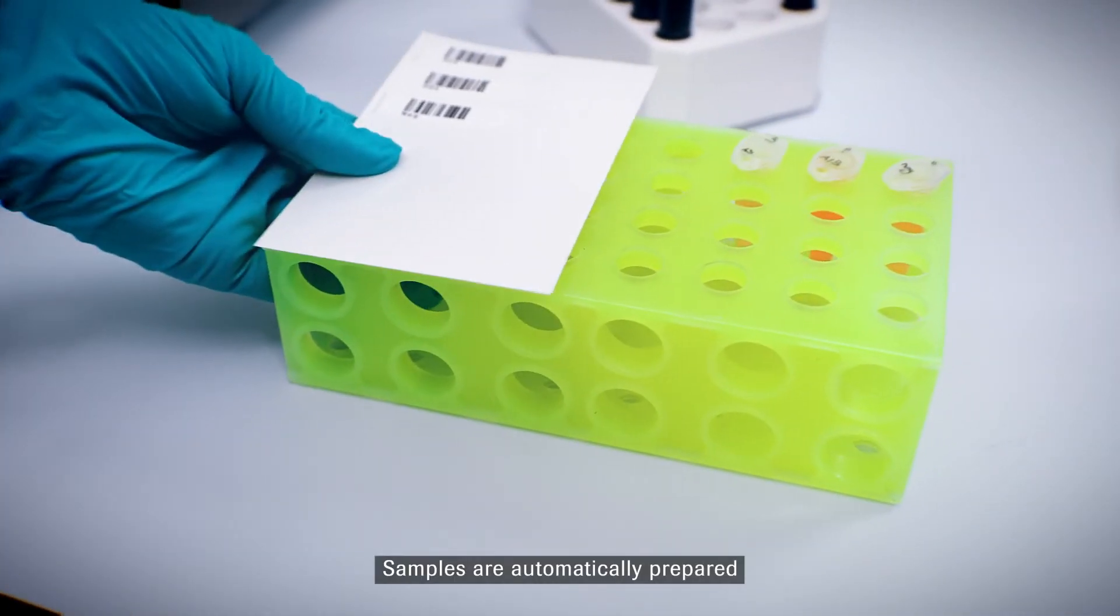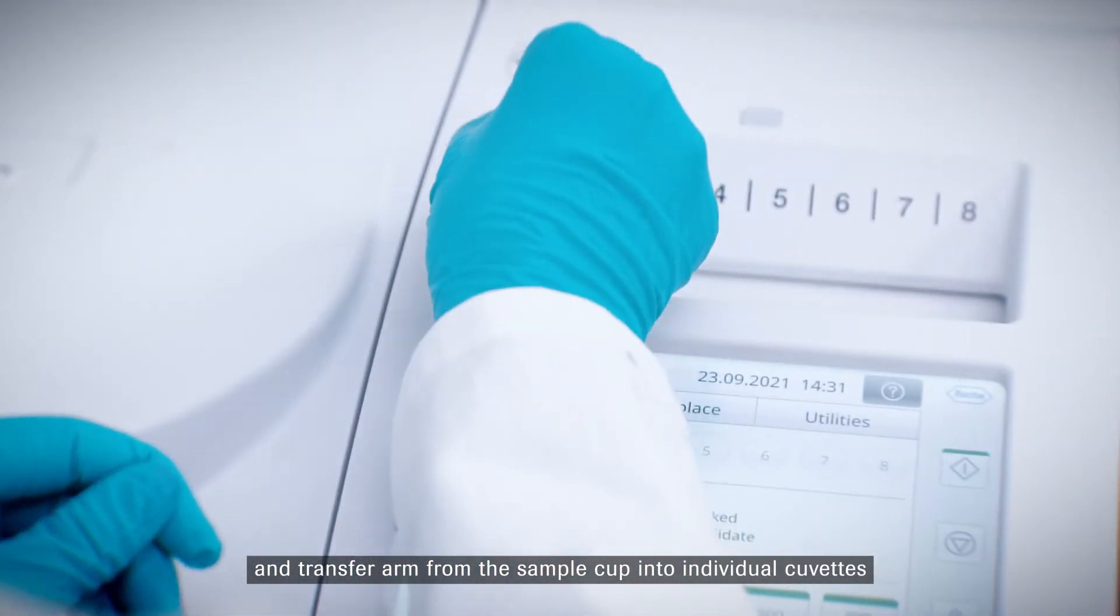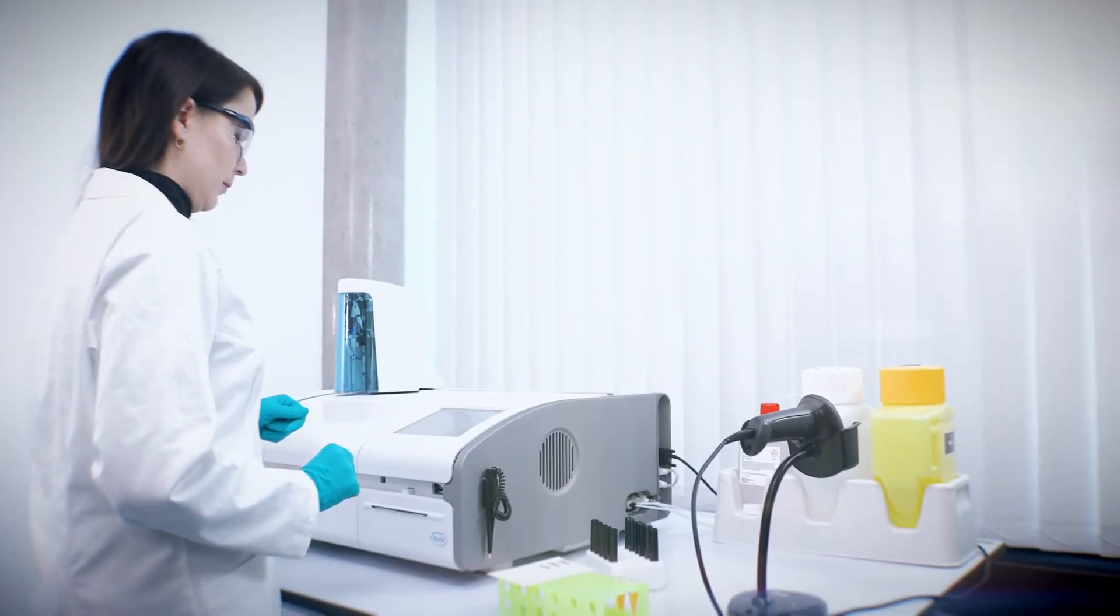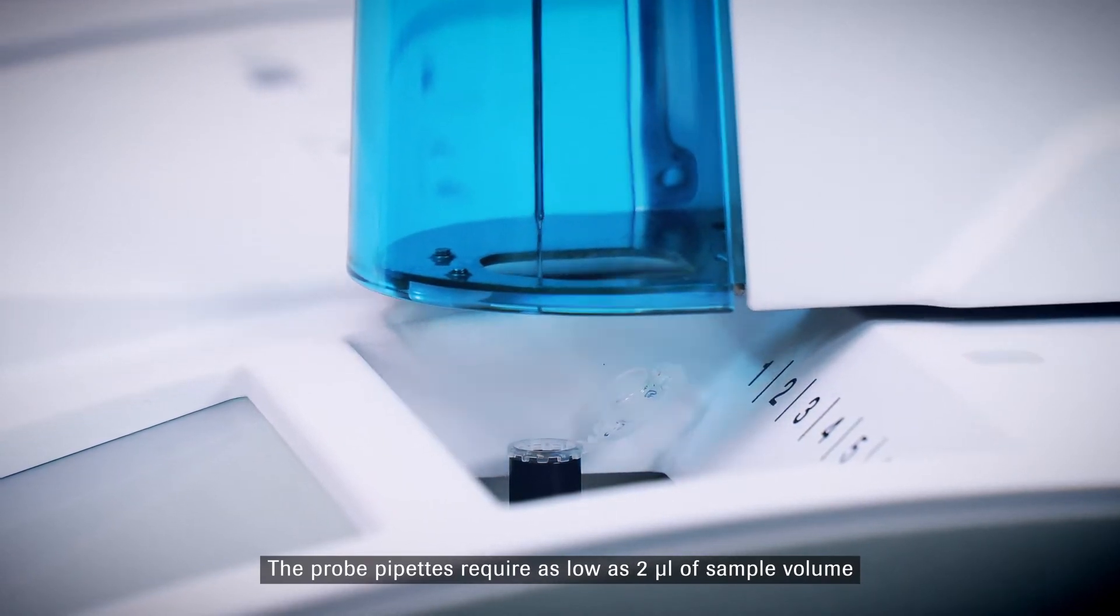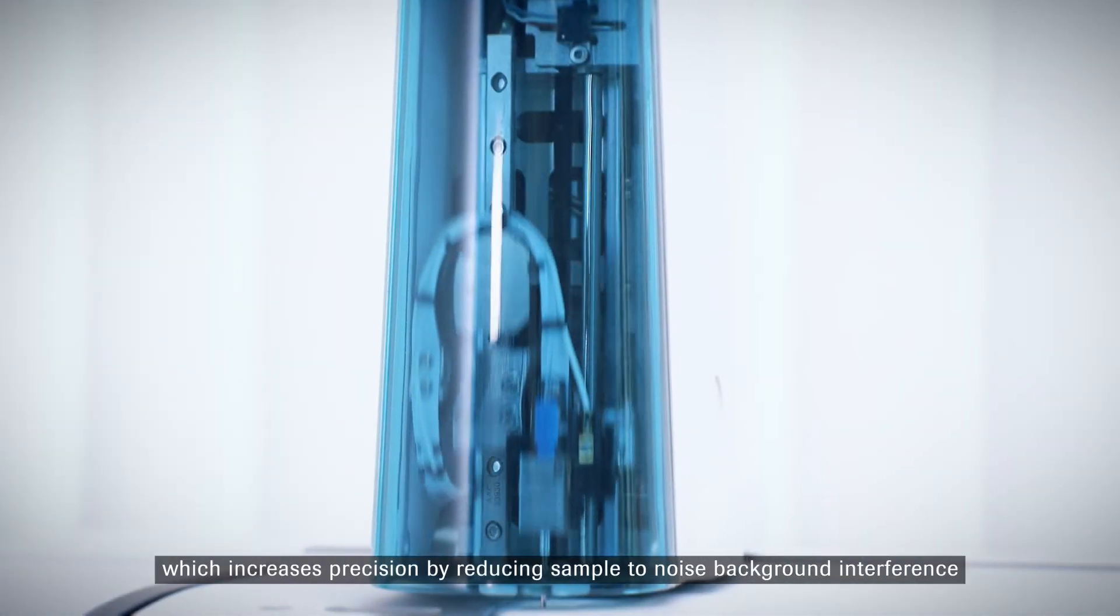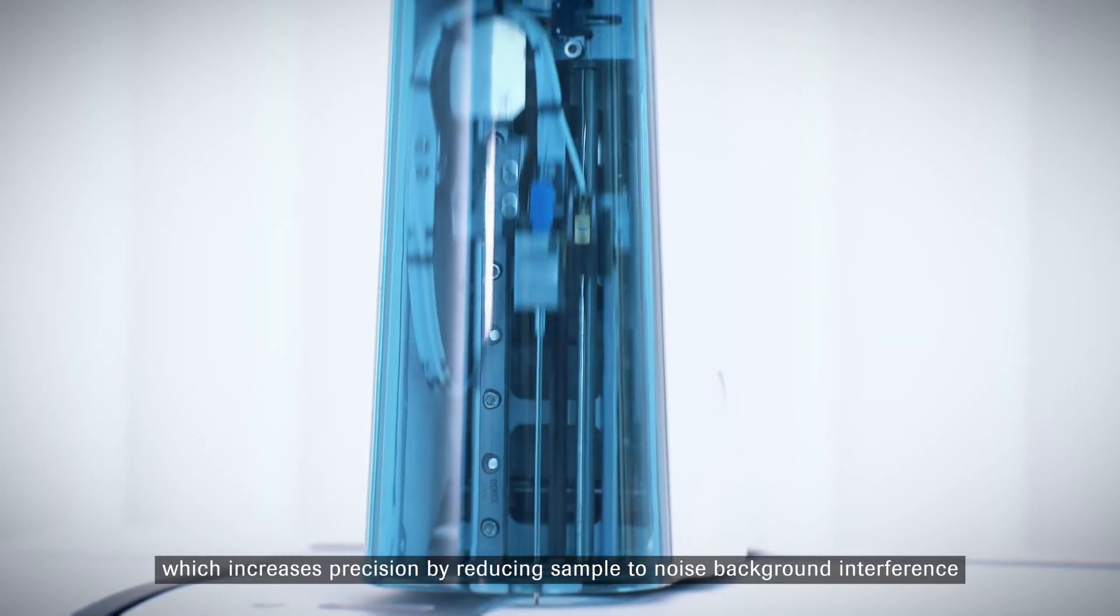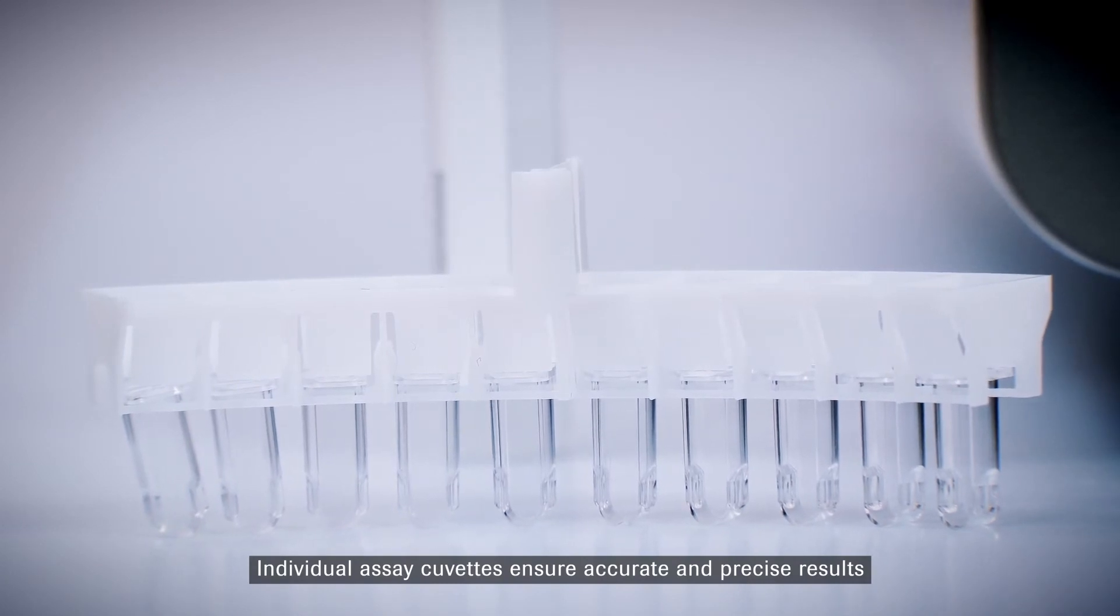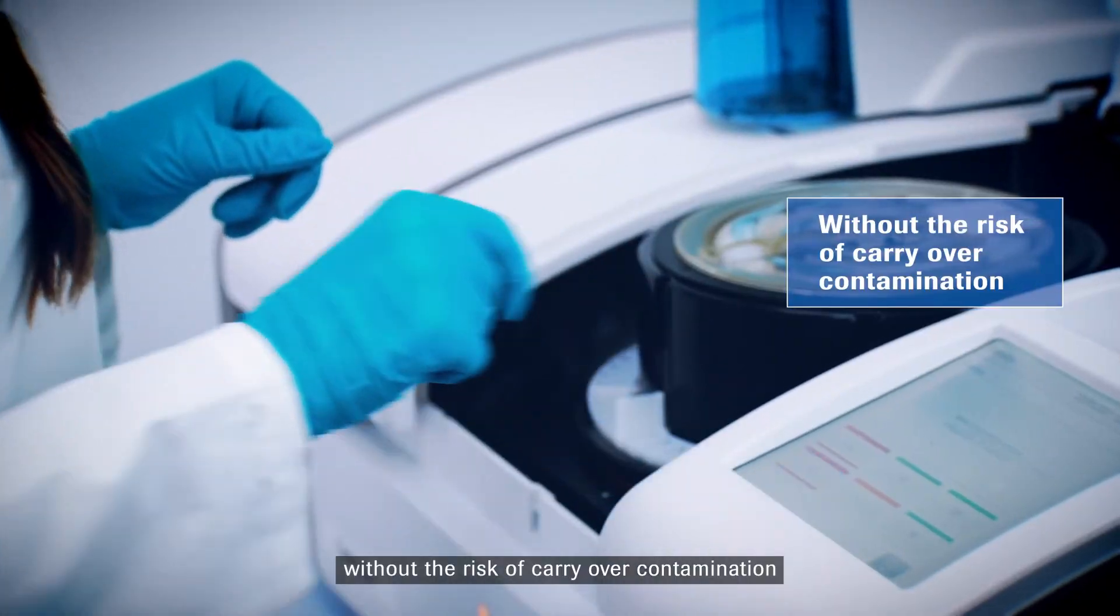Samples are automatically prepared and pipetted by the probe and transfer arm from the sample cup into individual cuvettes. The probe pipettes require as low as 2µL of sample volume, which increases precision by reducing sample-to-noise background interference. Individual assay cuvettes ensure accurate and precise results without the risk of carryover contamination.